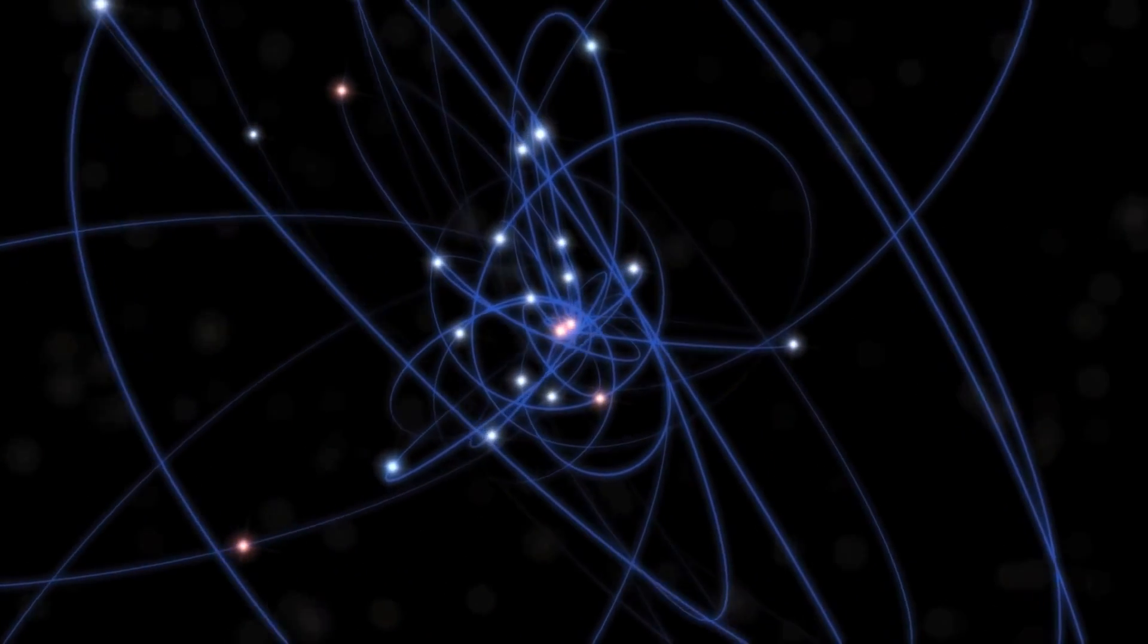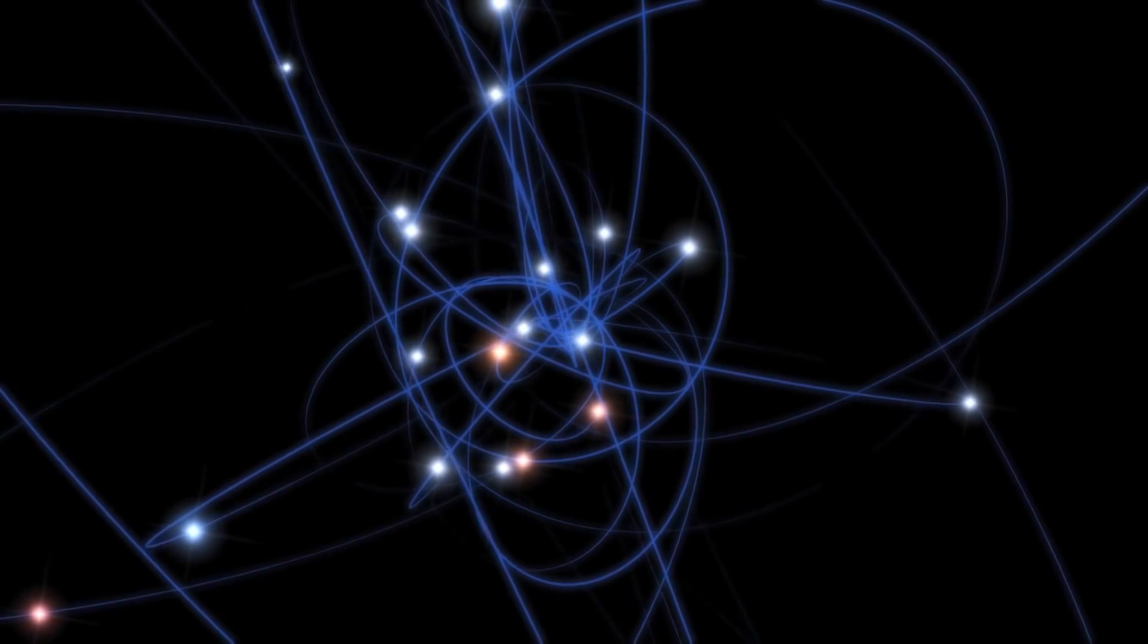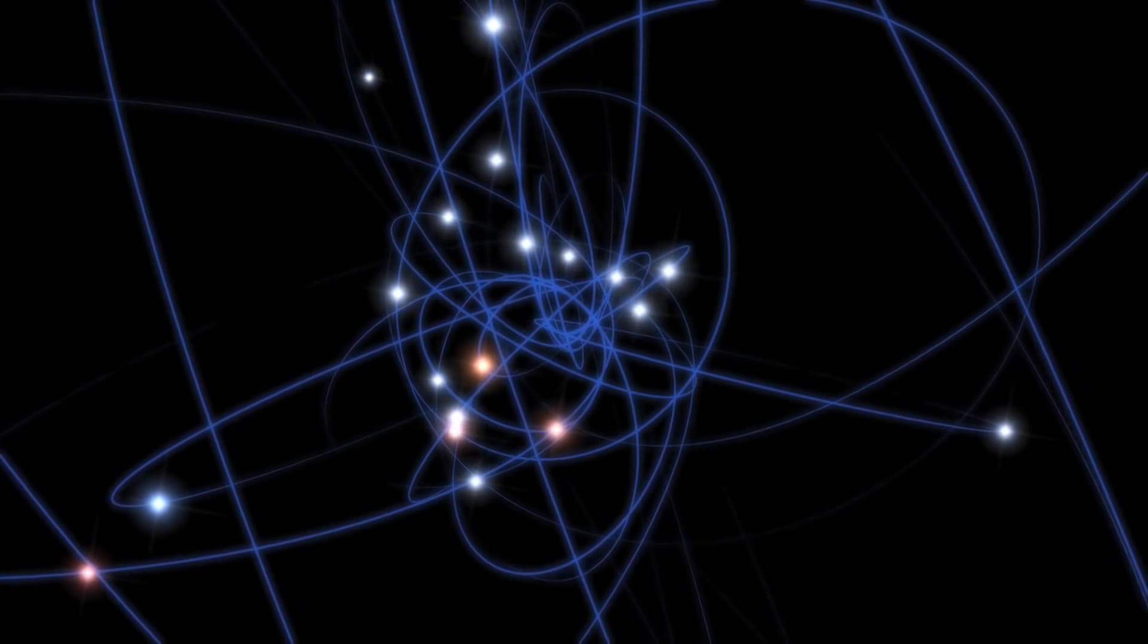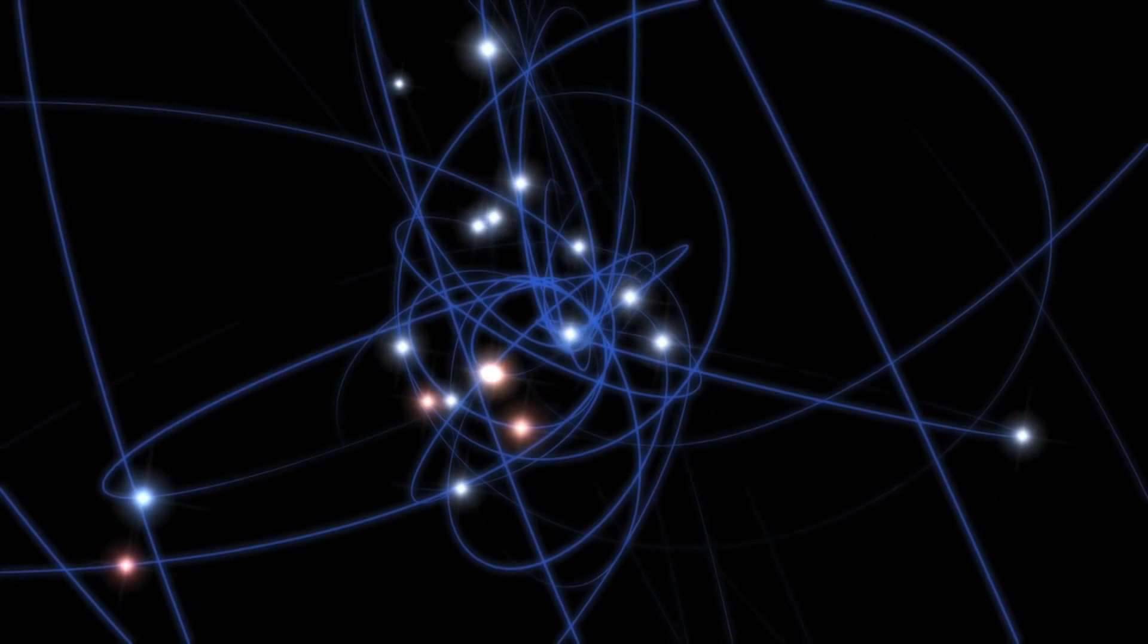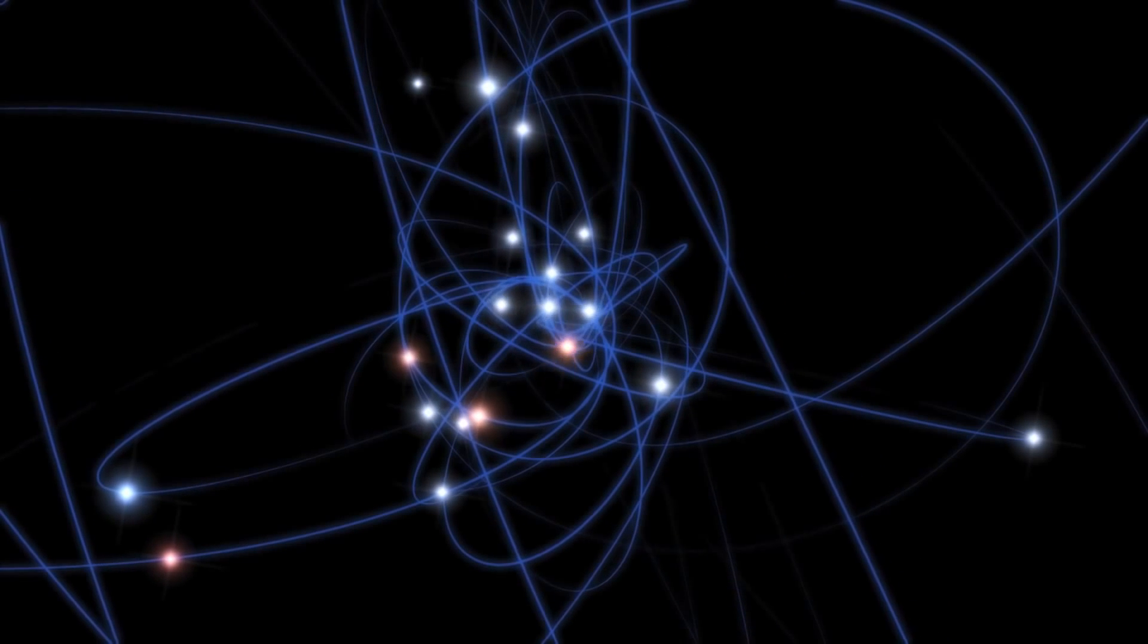This black hole's mass is a hefty 4 million times that of the Sun, earning it the title of supermassive black hole. Although it is huge, this black hole is currently supplied with little material and is not shining brightly, but this is about to change.